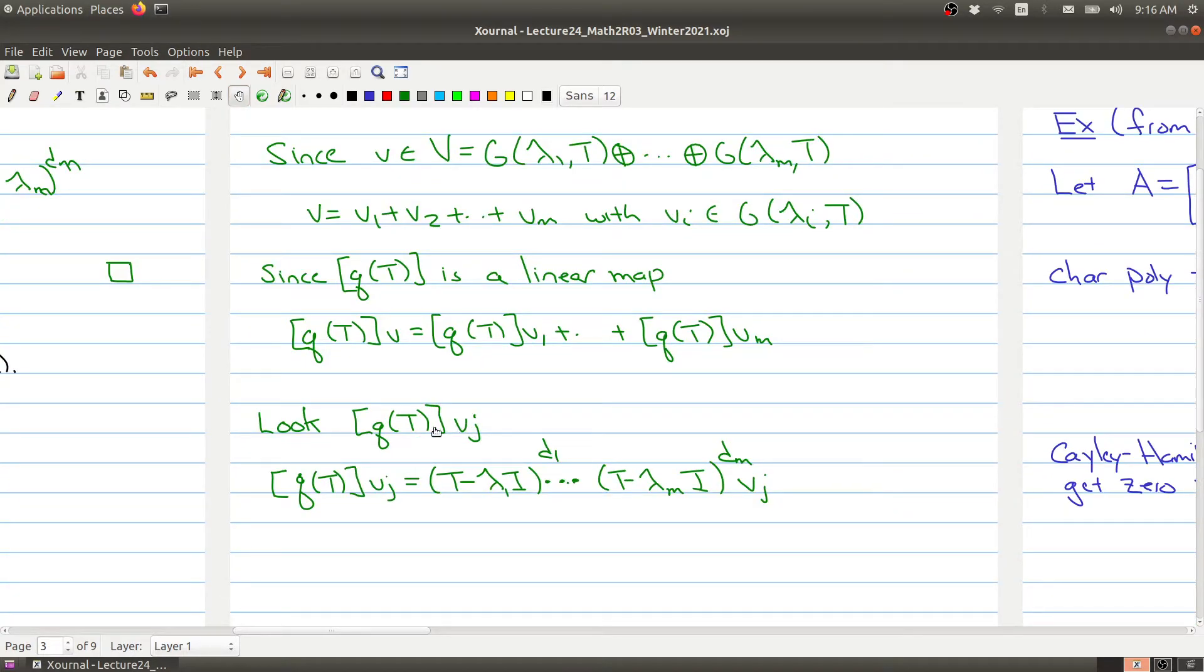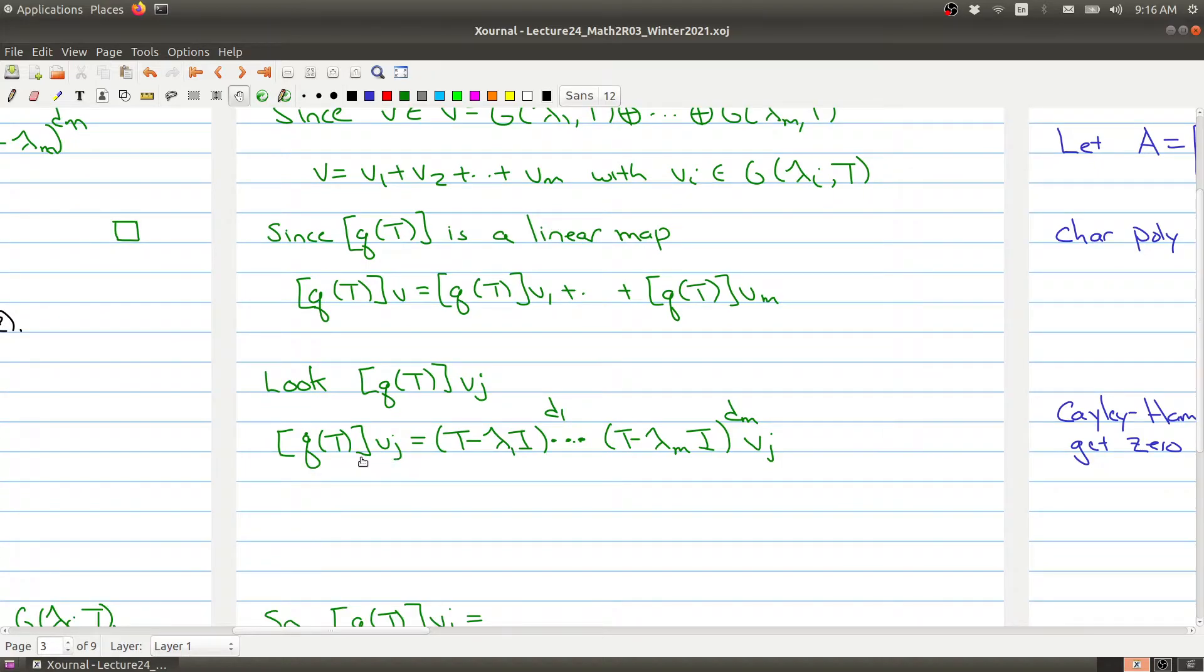Let's look at a specific term inside this sum - let's look at q(T)(vⱼ). We're looking at this linear operator evaluated at vⱼ, and this is our expression right here. Because these operators all come from polynomials, they all commute.